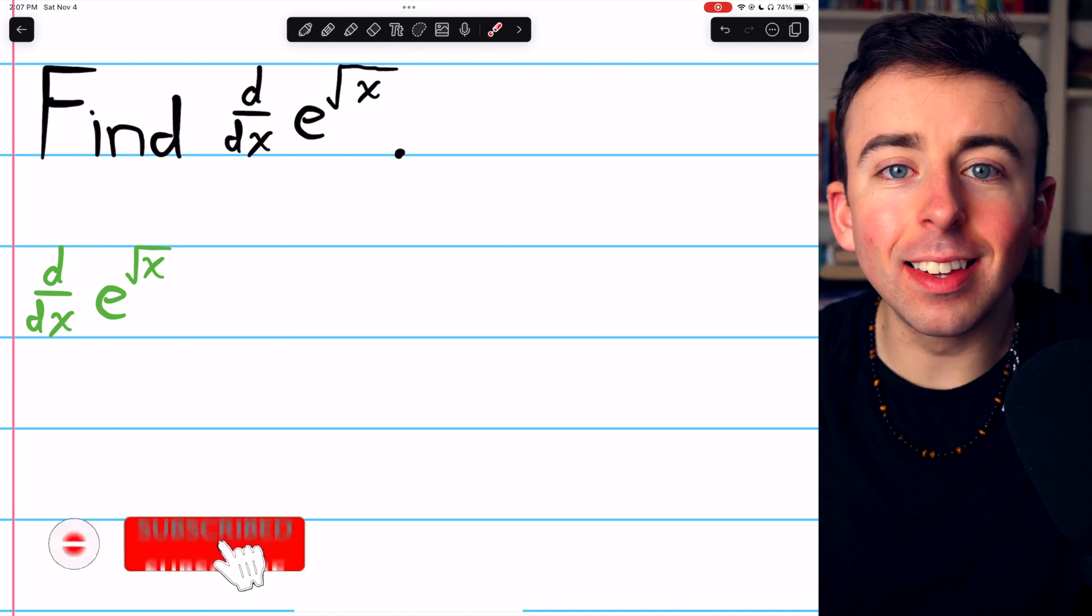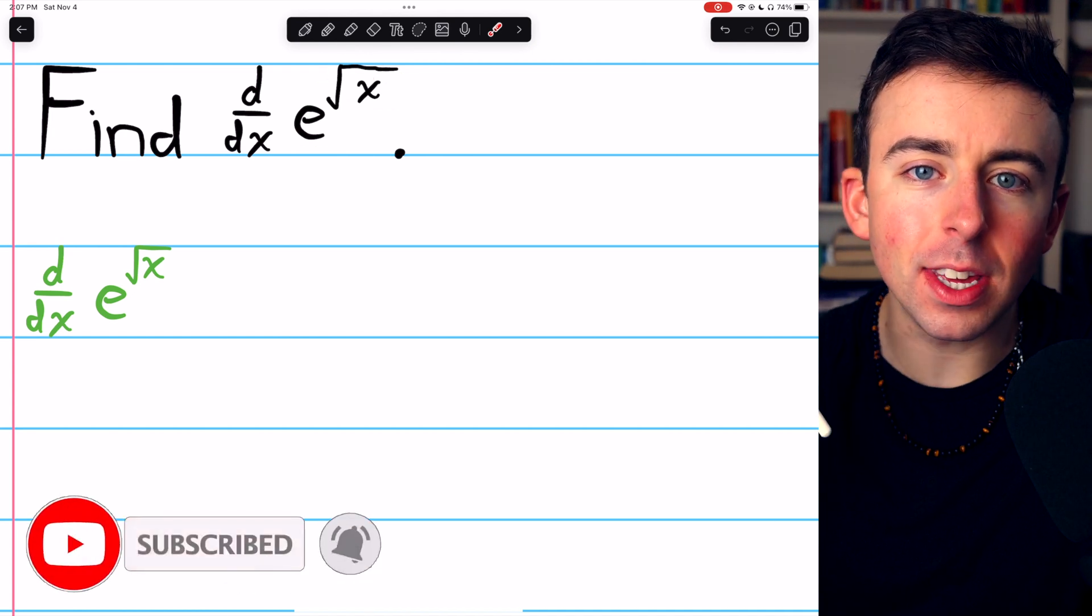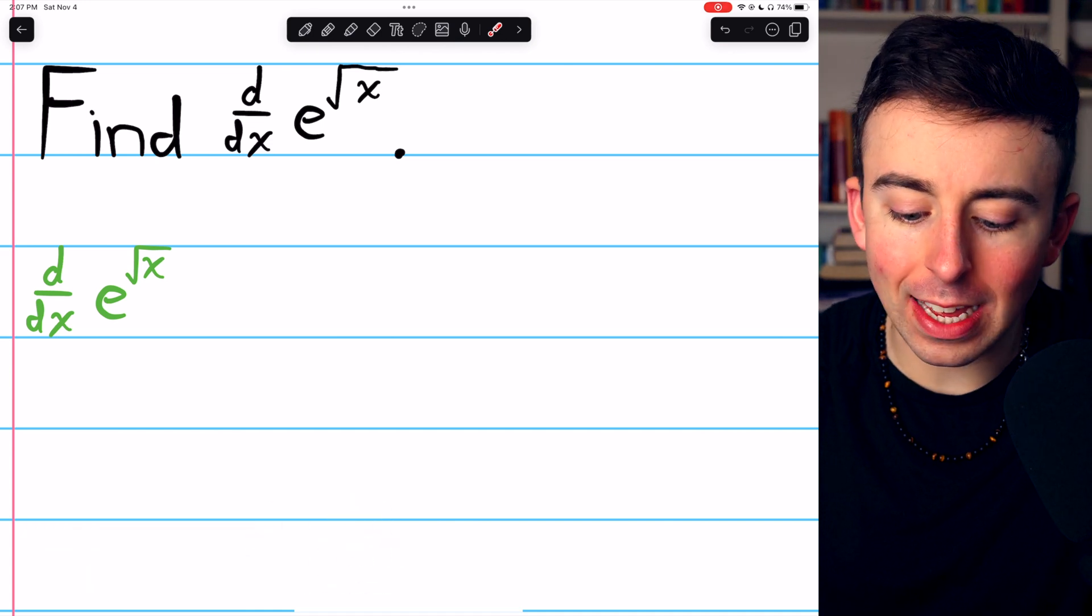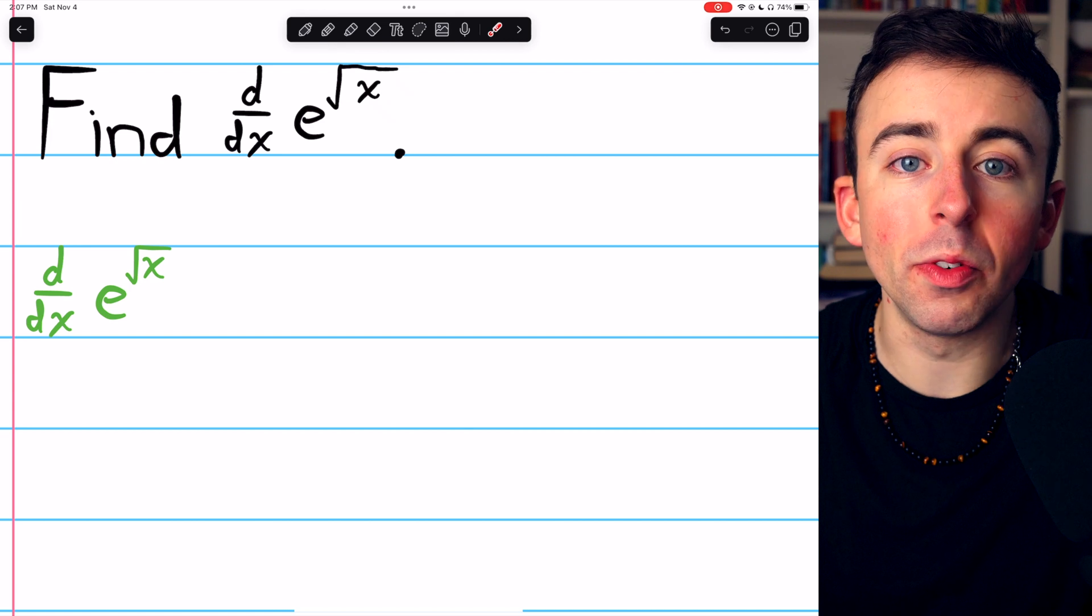e to the square root of x is a composite function. The outside function is e to some power, and the inside function is that power, square root of x.